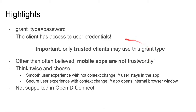Here are some highlights. The grant type is called 'password' and this is the flow where a client has access to user credentials — this is the only OAuth flow where this is the case. For that reason it is important to remember that this flow should only be used with trusted clients, because the user is sharing his username and password with this client.